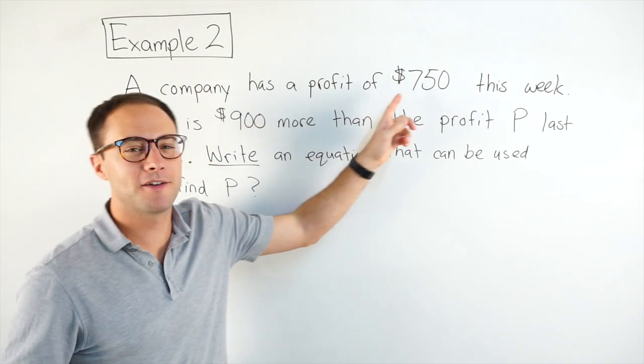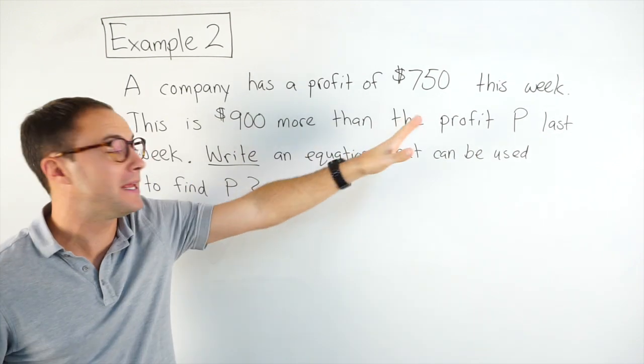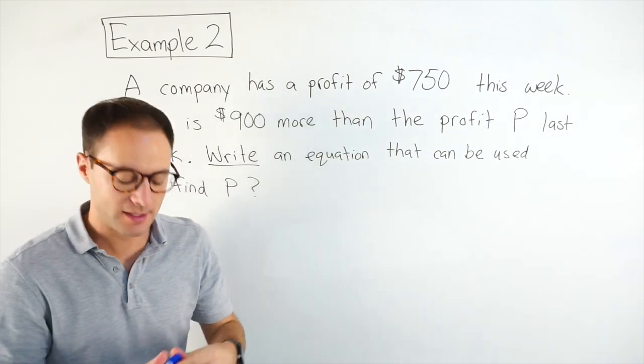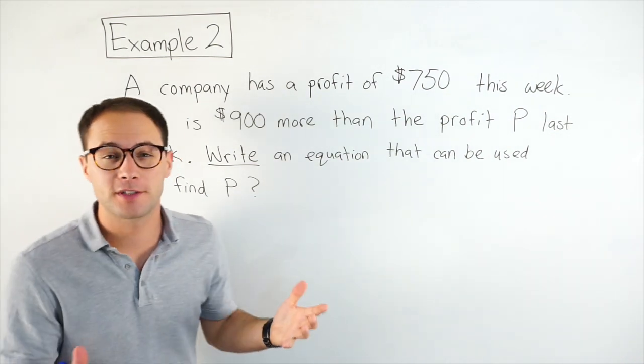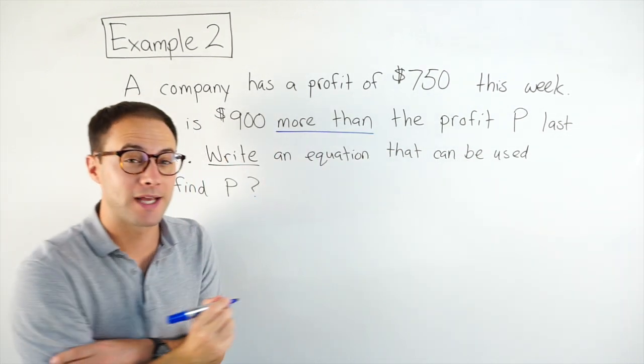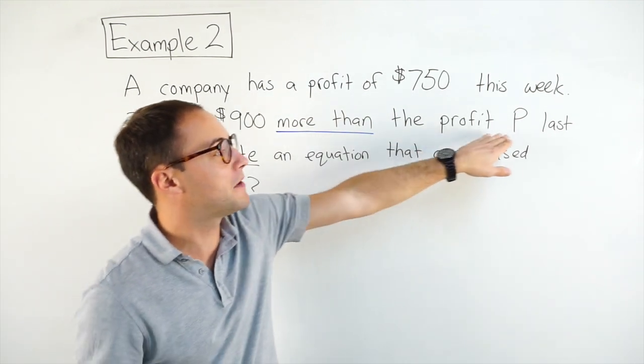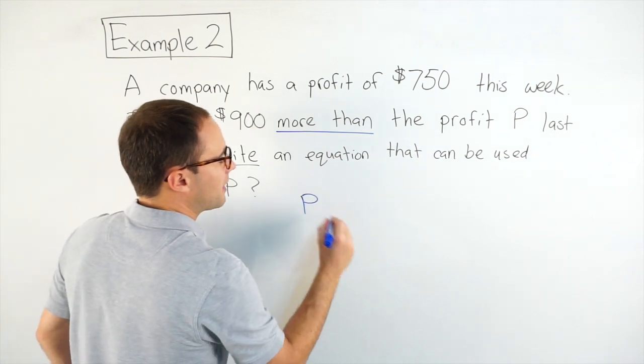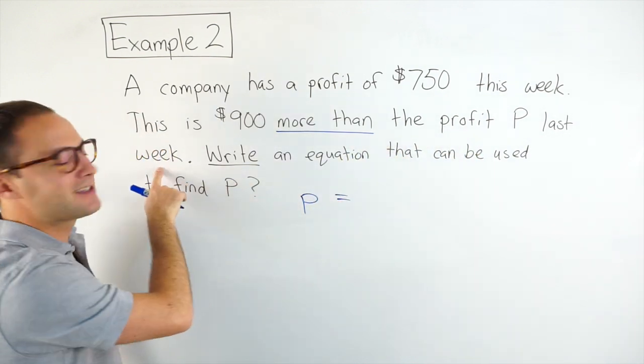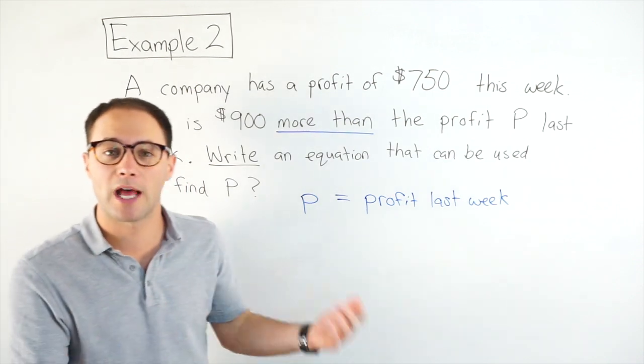Okay, example 2. A company has a profit of $750 this week. This is $900 more than the profit p last week. Write an equation that can be used to find p. So when we have a word problem like this, and we're trying to write an equation, the first thing we're looking for are keywords, right? So if you look here, hopefully, more than jumps out at you. You also want to think, well, we're writing an equation. What's my variable going to be? Well, they tell us the profit p. p is going to be the variable. So I'm going to write p as my variable. And it's always important to know, well, what does that variable represent? The profit p last week. So p represents the profit last week.